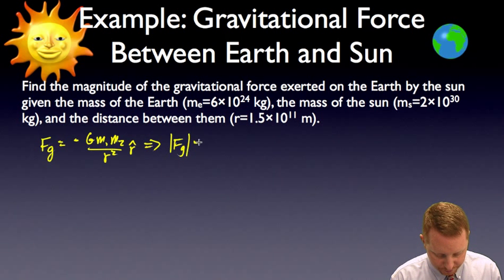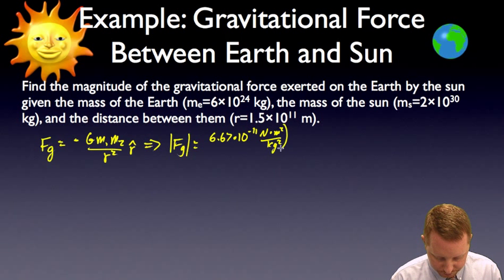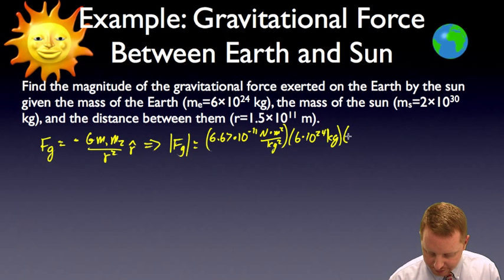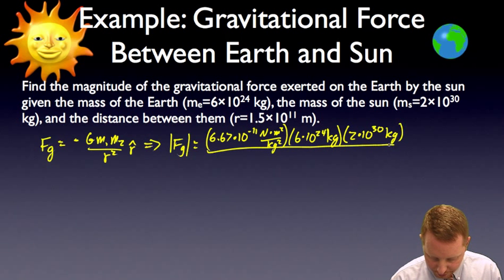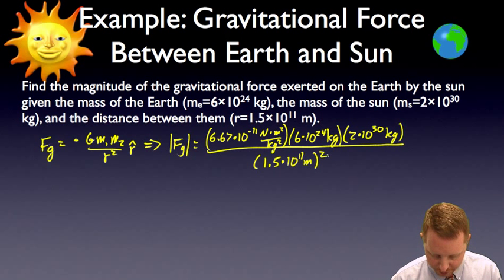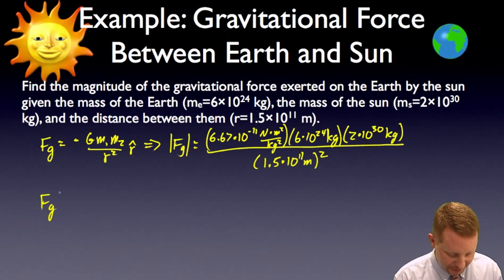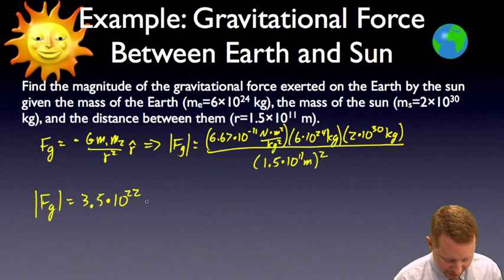The magnitude of the force of gravity is G — 6.67 times 10 to the minus 11 newton meters squared per kilogram squared — times the mass of the Earth, roughly 6 times 10 to the 24 kilograms, times the mass of the Sun, significantly bigger at about 2 times 10 to the 30 kilograms, divided by the square of the distance between them, roughly 1.5 times 10 to the 11 meters squared. After calculation, the gravitational attraction has a magnitude of 3.5 times 10 to the 22 newtons.